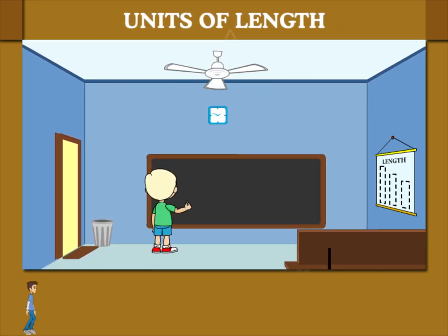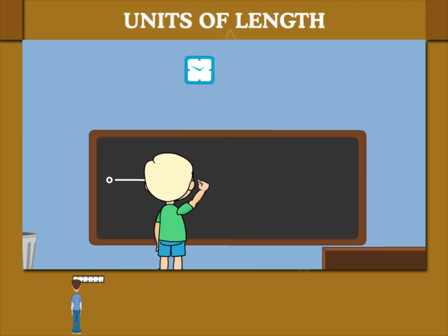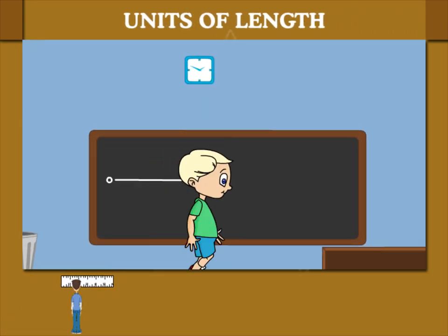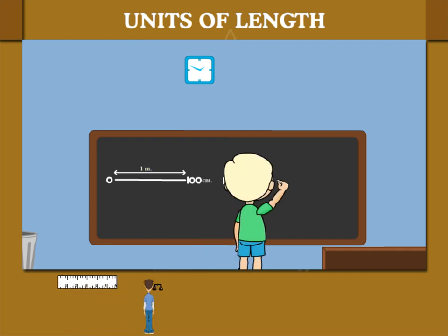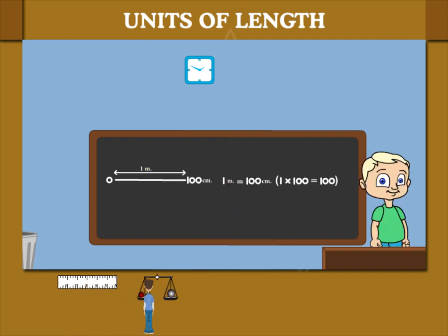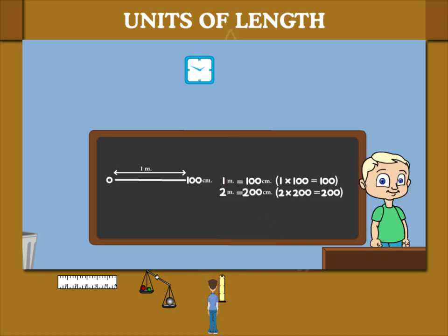Units of Length. Kamal draws a line on the blackboard. He writes its equivalent: 1 meter is equal to 100 cm, and 2 meters is equal to 200 cm.